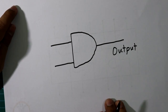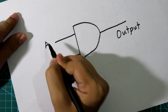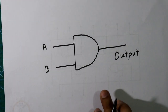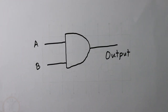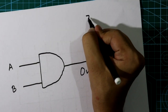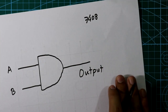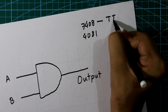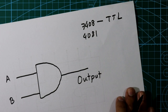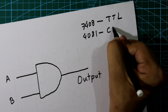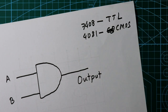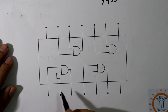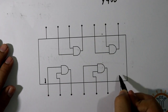This is the symbol of the AND gate. Here is input A and here is input B — that is the two input AND gate. We have AND gate IC 7408 or 4081. This IC 7408 is TTL logic — transistor-transistor logic — and the 4081 is CMOS.